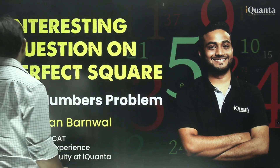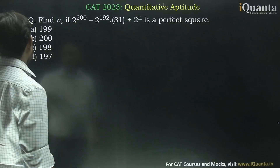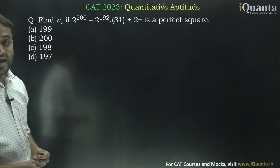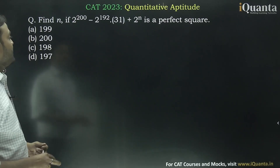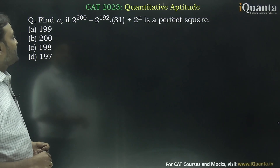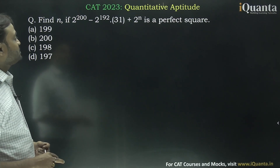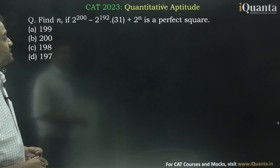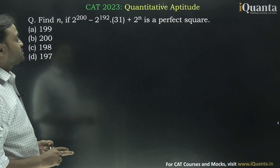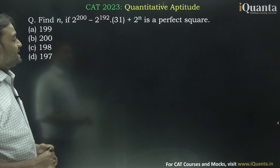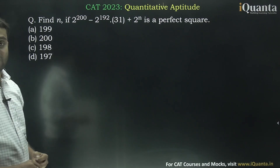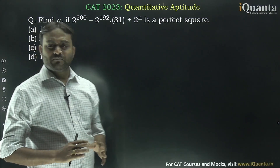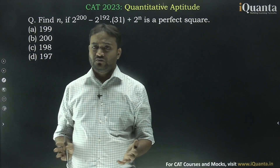In this question, it says: find n if 2 to the power 200 minus 2 to the power 192 into 31 plus 2 to the power n is a perfect square.